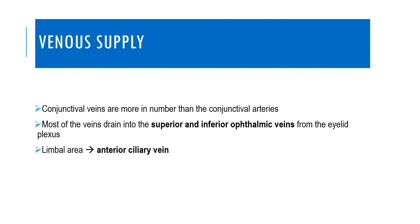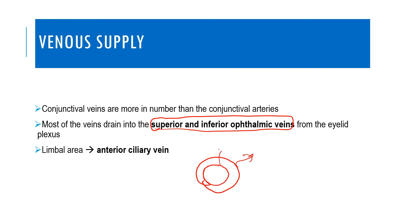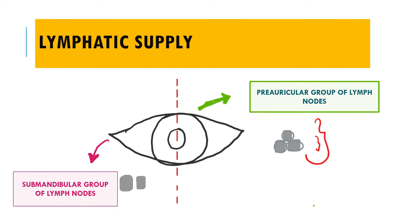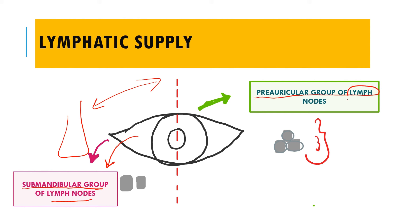For venous supply, the conjunctival veins are more numerous than the conjunctival arteries, and most drain into the superior and inferior ophthalmic veins from the episcleral plexus. The limbal area drains into the anterior ciliary vein. For lymphatic supply, dividing the eyeball into two halves: the medial part drains into the submandibular group of lymph nodes, while the lateral part drains into the preauricular group of lymph nodes.